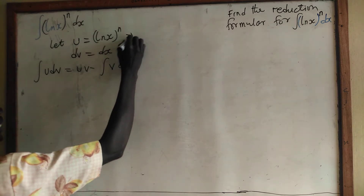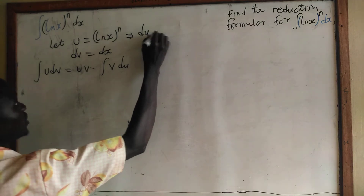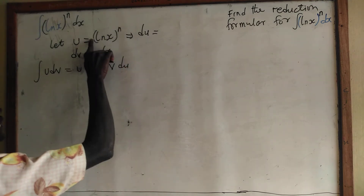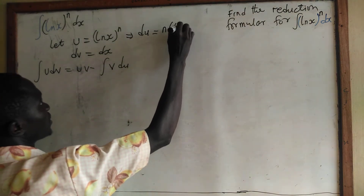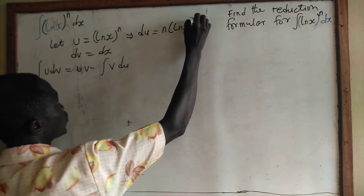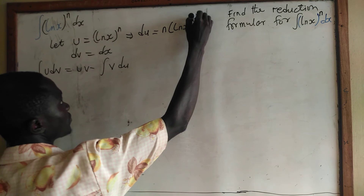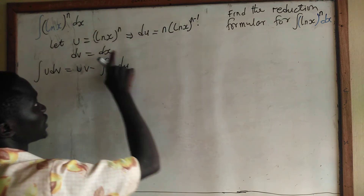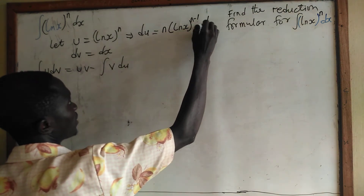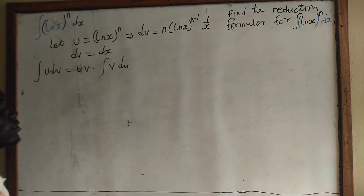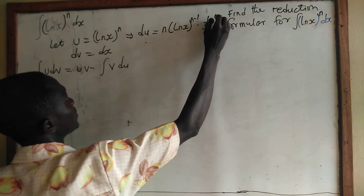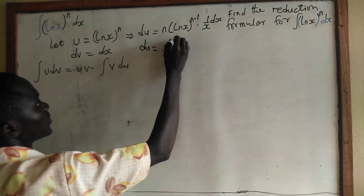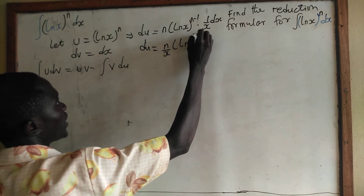This implies that when we differentiate, du will be equal to — we are going to use the chain rule here — so n will come down and multiply, giving us n times (ln x) to the power n minus 1, and then we differentiate the inner function and multiply it. If you differentiate ln x we get 1 divided by x. So du is equal to n over x times (ln x) to the power n minus 1 dx.